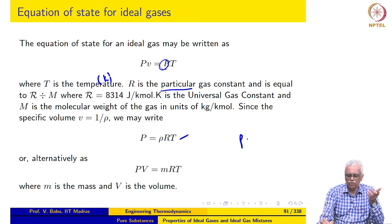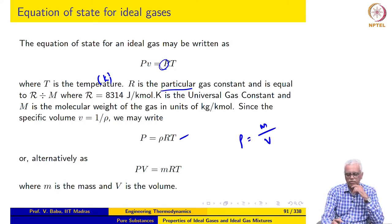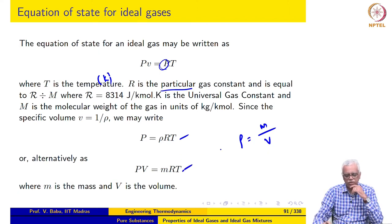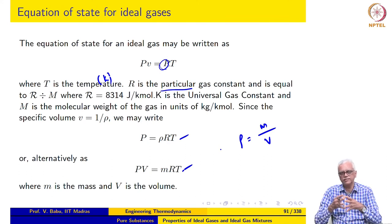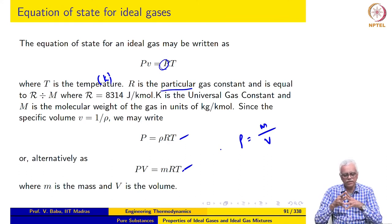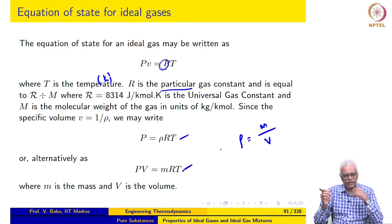Since ρ, the mass density, is mass divided by volume, we may also rewrite this as PV = MRT, where M is the mass of the gas and V is the volume occupied by the gas. So if you have the gas in a certain vessel, V is the volume of the vessel itself. This is the ideal gas equation of state.